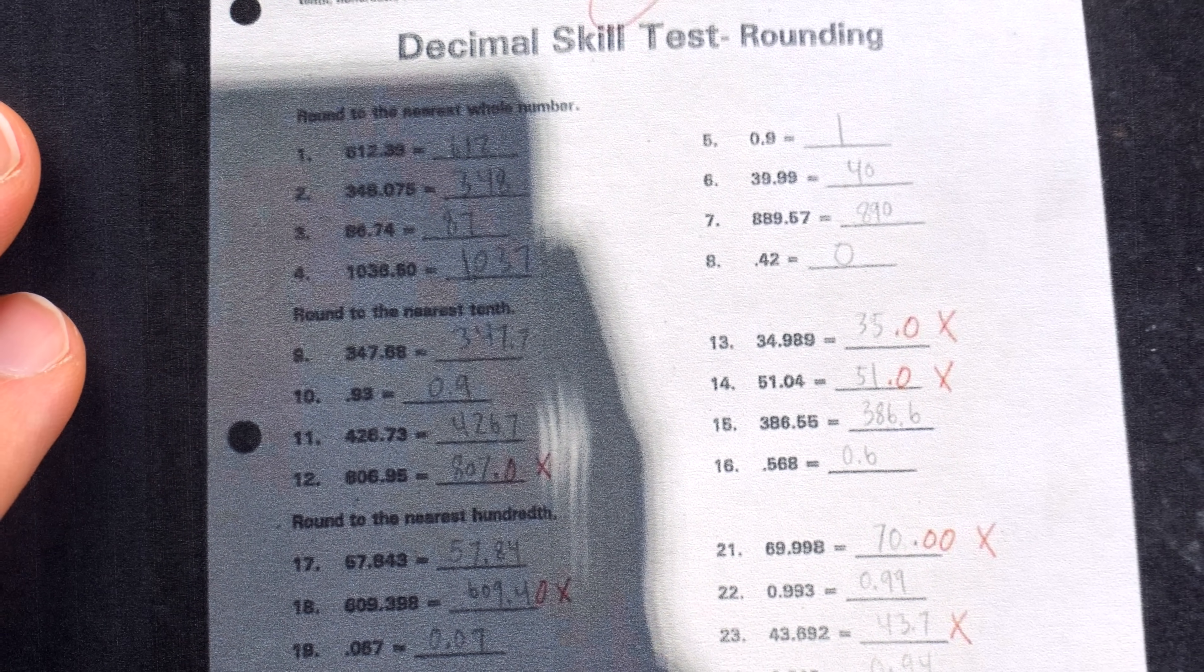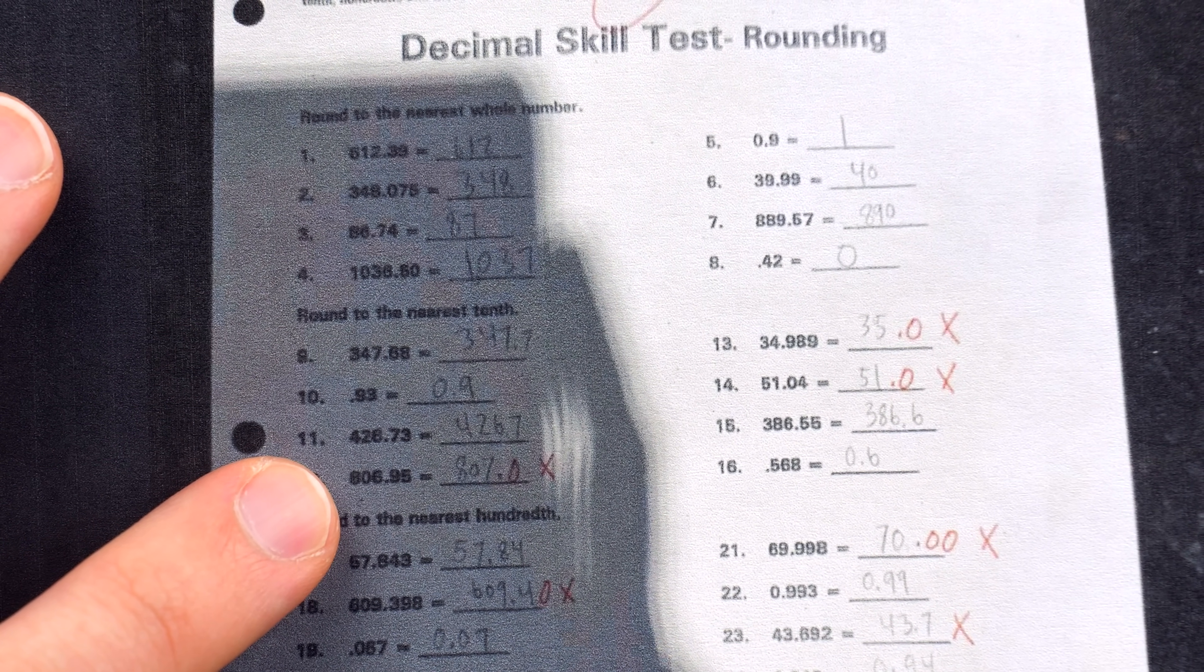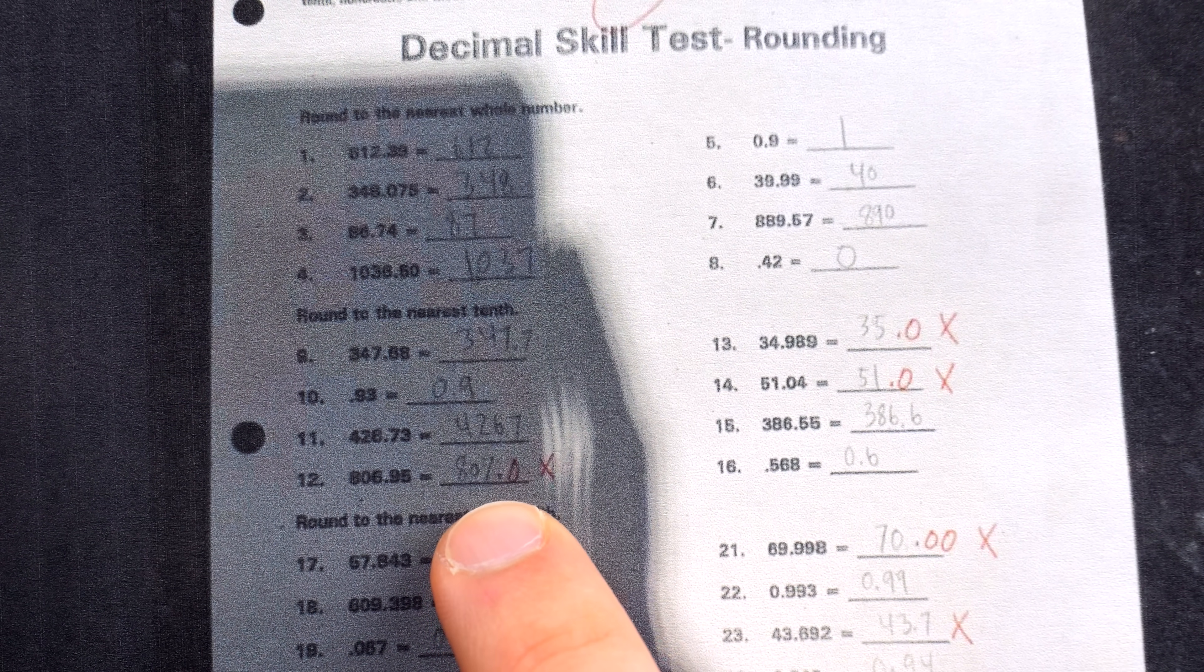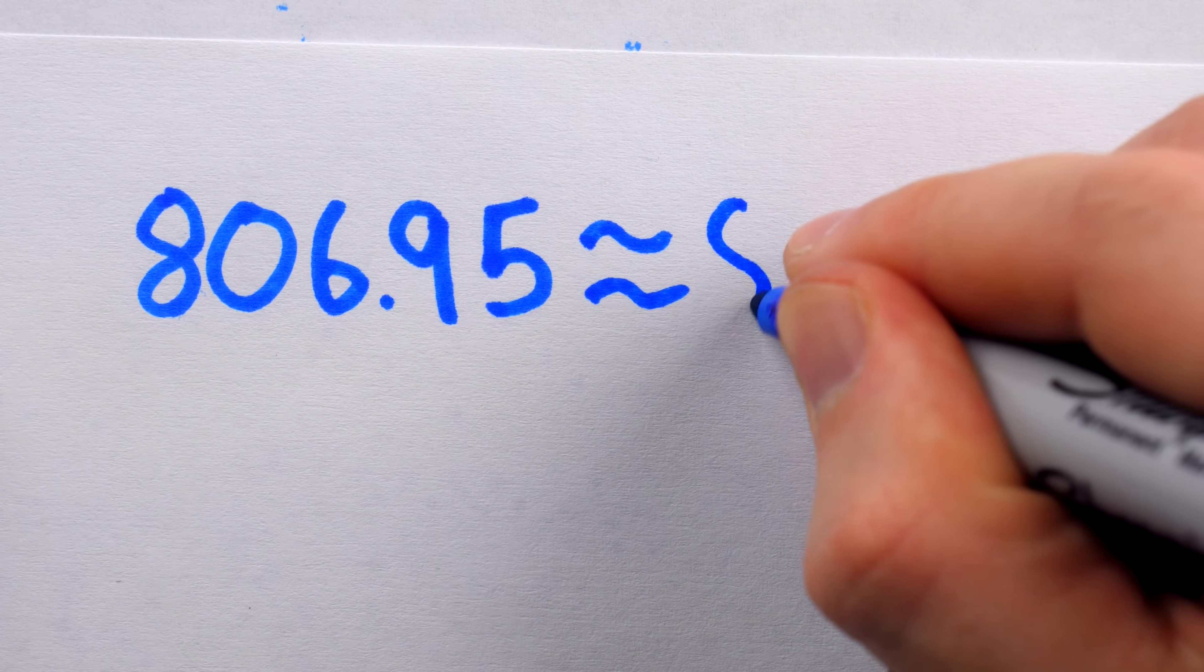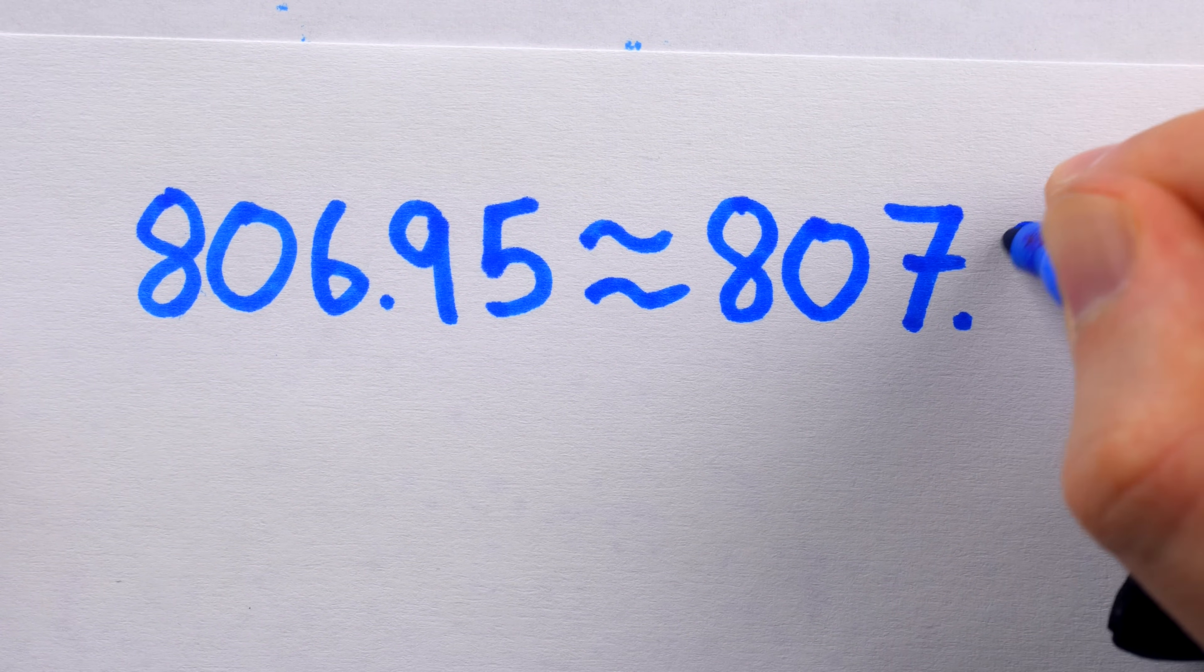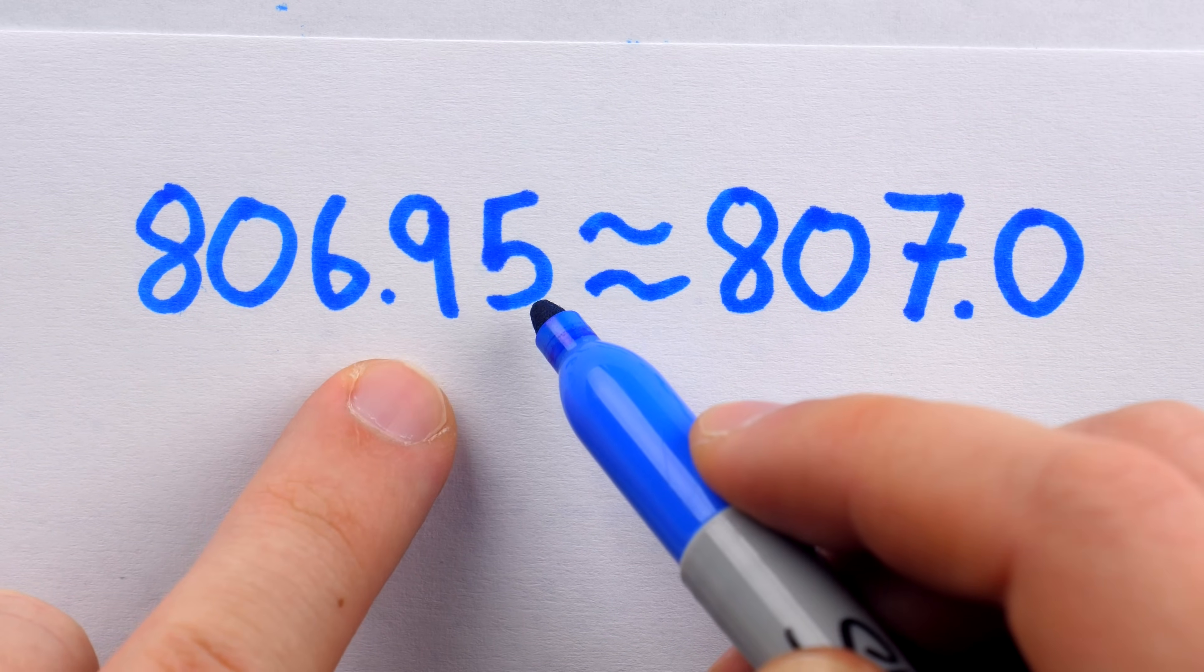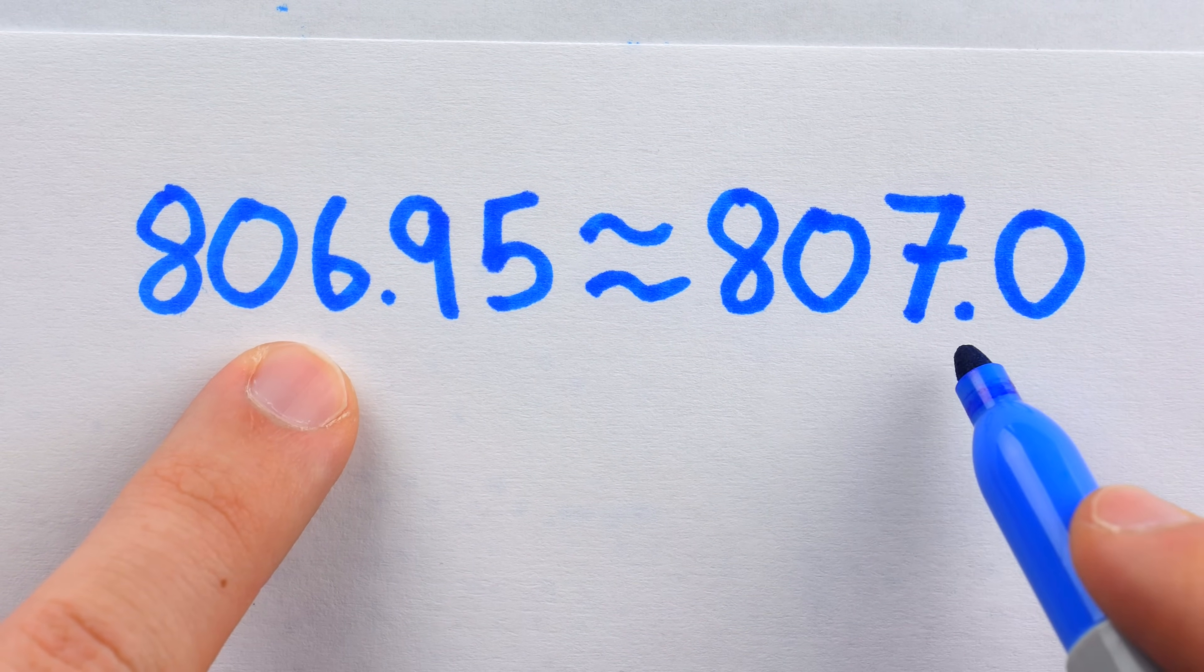Now, when it comes to rounding numbers, the situation is similar. Let's look at problem 12, where the student was asked to round 806.95 to the nearest tenth. The correct answer was 807.0. So the teacher said 806.95 rounded to the nearest tenth is 807.0, because we look at the 0.9, because the next digit is a 5, round that up, and so it ends up being 807.0.